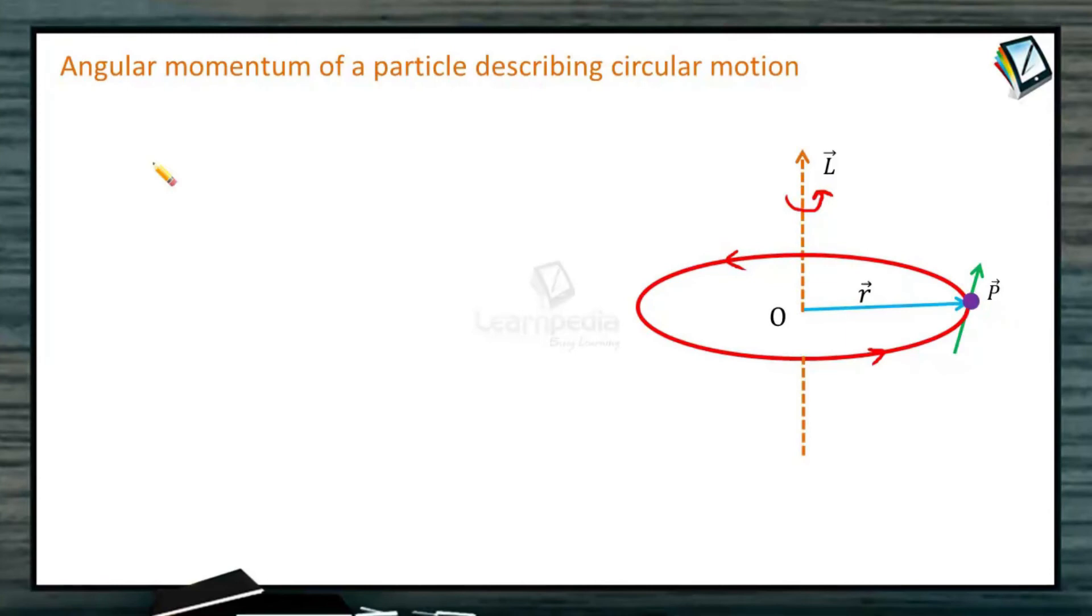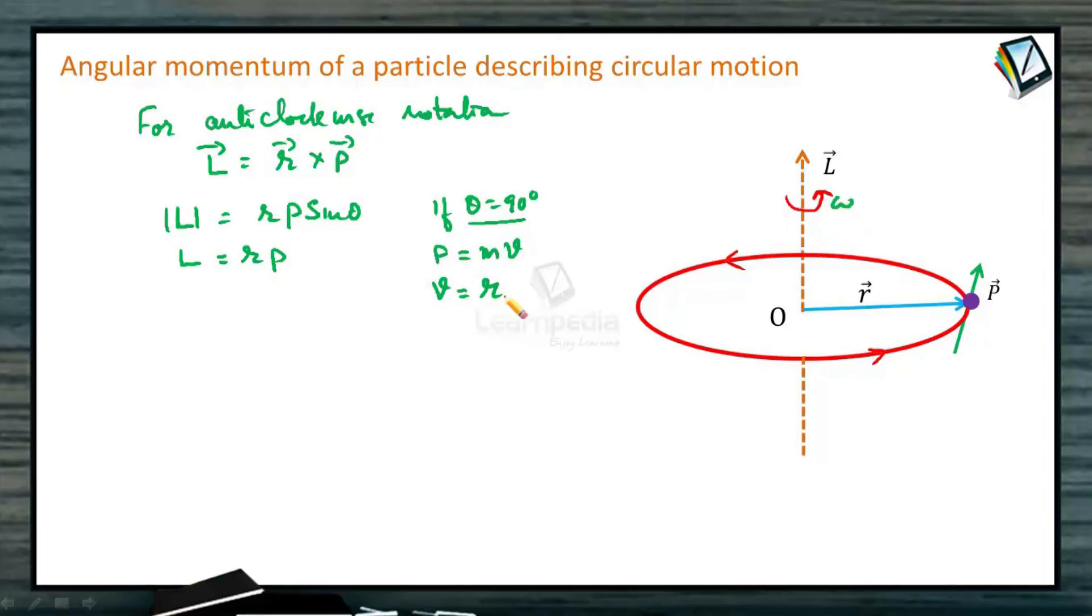Then for anti-clockwise rotation, L vector is equal to r vector cross p vector. p vector is along the tangent. Magnitude of L vector will be equal to r p sin theta. If theta is equal to 90 degrees as in this figure, p is tangent, r is the radius, angle theta is 90. So magnitude of angular momentum will be r into p, where p is m into v. v is the tangential velocity we can also write in terms of angular velocity omega as v is equal to r omega. Then we can write this as r into m into r omega.